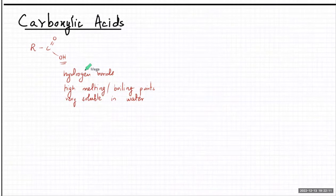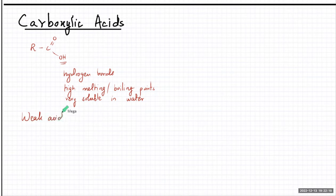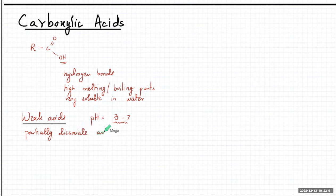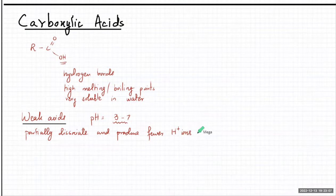Carboxylic acids - first thing is that they're weak acids. Weak acids means that they ionize partially. They're considered to be the strongest of the weak acids. The pH is around 3 to 7. They partially ionize and produce fewer H⁺ ions - they partially dissociate and produce fewer H⁺ ions, so they're weak acids.